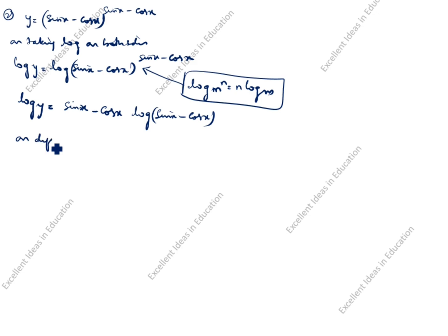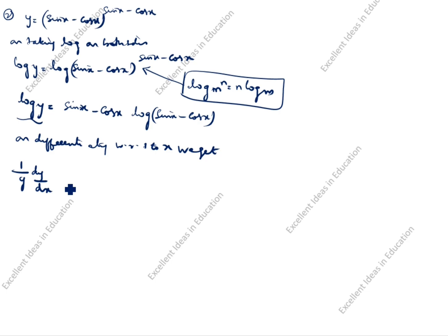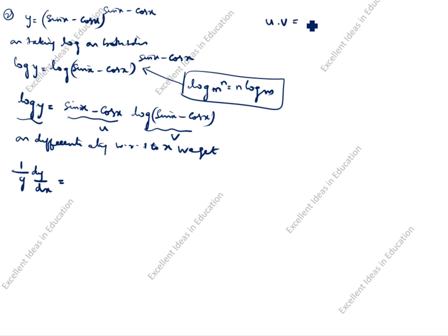On differentiating with respect to x we get: differentiating log y gives 1 over y times dy by dx. Now the right side is a product of u and v, where u is (sin x minus cos x) and v is log of (sin x minus cos x), which requires the chain rule. This is the product rule: u times v dash plus v times u dash.